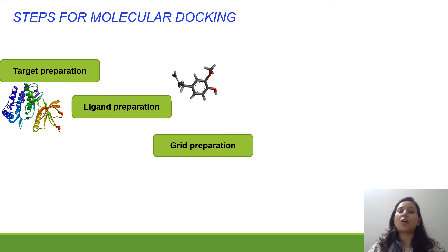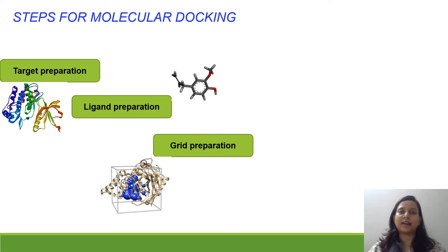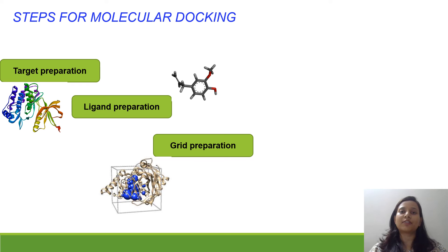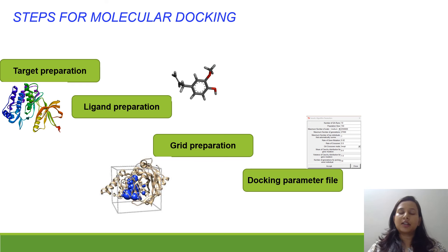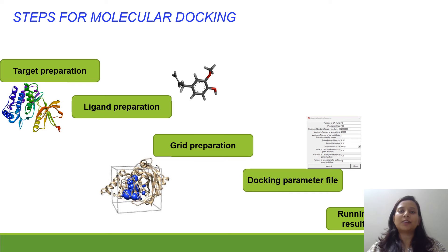Once we have all files in PDB and PDBQT format for the target and protein, we prepare the grid. The grid defines the area where the ligand is going to dock with the protein — to identify that particular binding area, we generate the grid. Once the grid is generated, we move ahead to creating the docking parameters, where we assign settings such as the number of runs and number of docking poses. Then we run the docking protocol and obtain results.